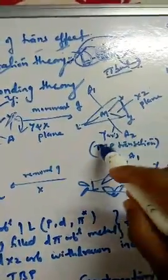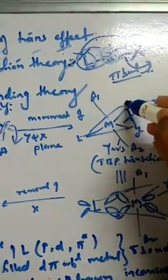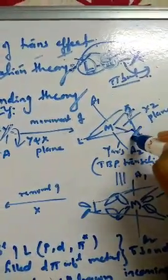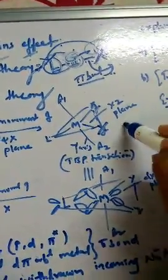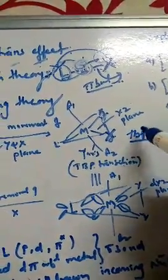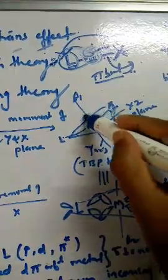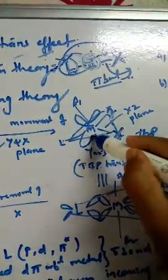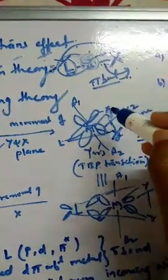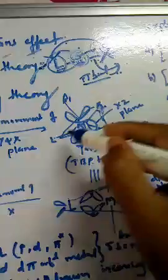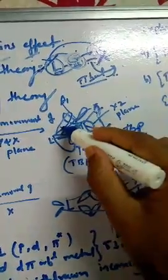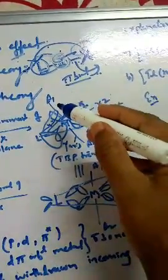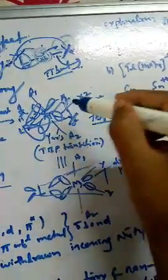There is formation of a trigonal bipyramidal transition state intermediate. Y is attached here in the xz plane, and the metal is at the center. This trigonal bipyramidal intermediate is very stabilized — stabilized because of the formation of the pi bond. The filled d-pi orbitals of the metal overlap with the empty orbitals of the ligand.